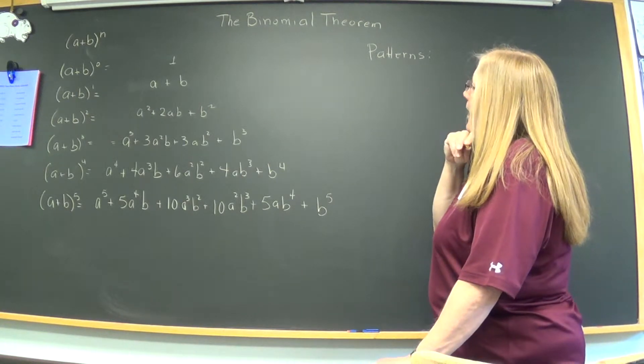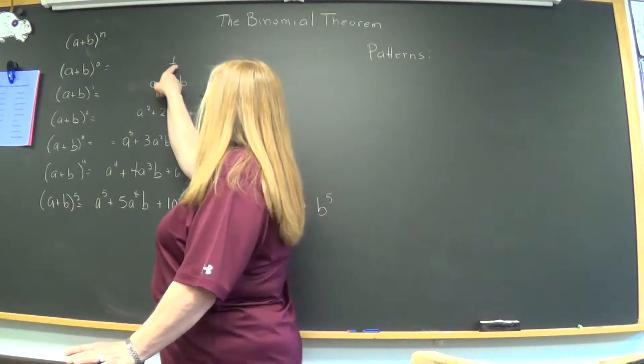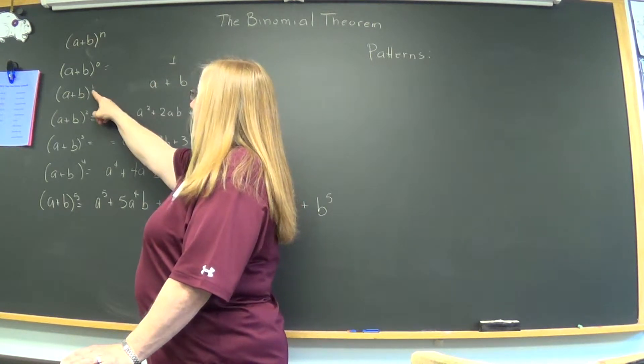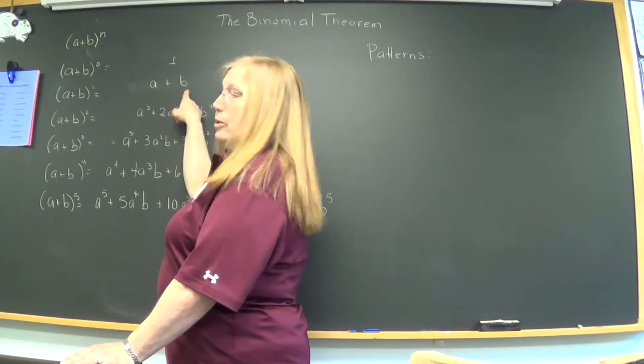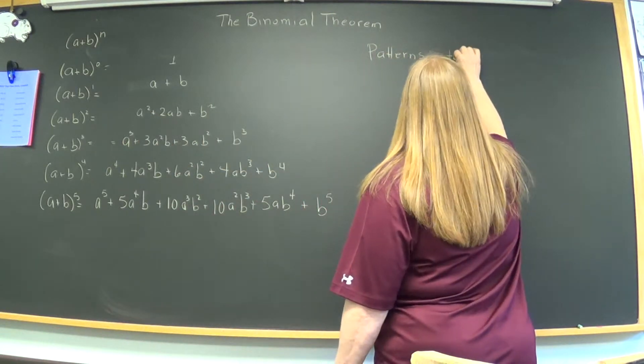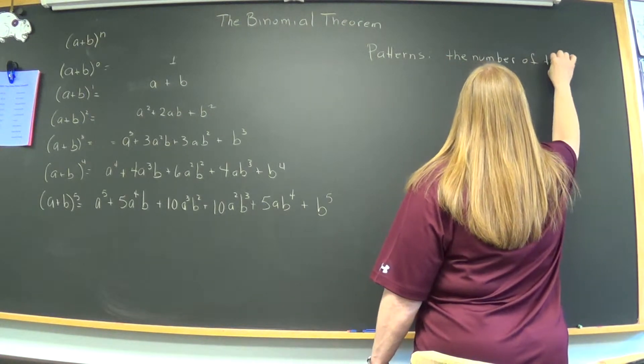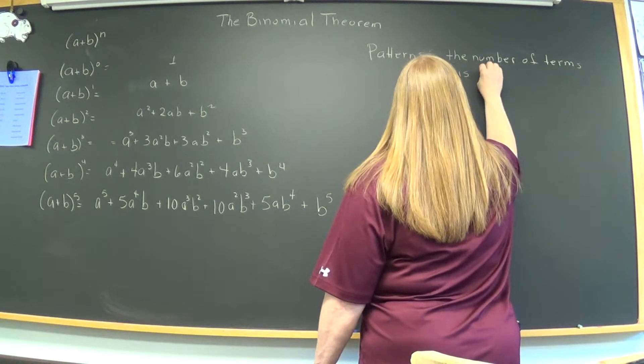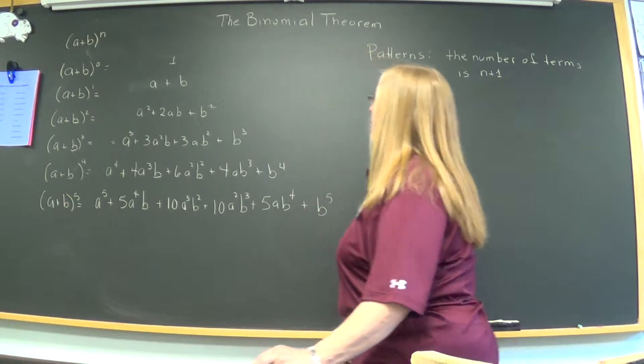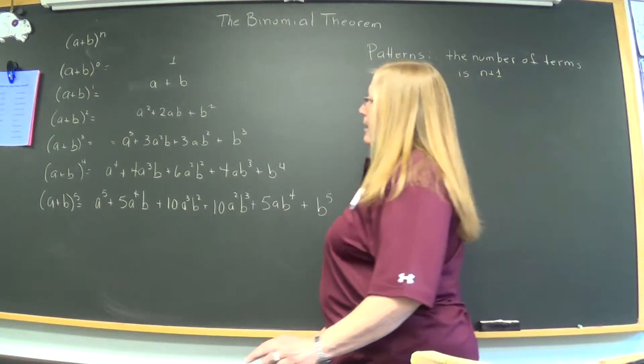Well, the first pattern, jot these down as well, and also have these down, so you'll probably have to take a pause point to get this down and come back to me. The patterns I observe, I see on the first row here, when the exponent was zero, I had one term, and when the exponent was one, I had two terms, and so on, two gave me three terms. So, the number of terms is n plus 1, where n is the power, a plus b to the n, the power that we're using.